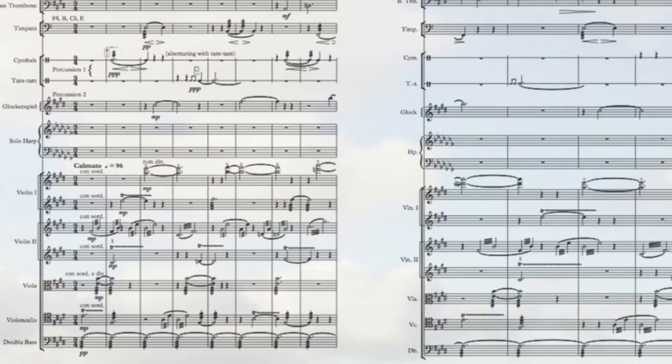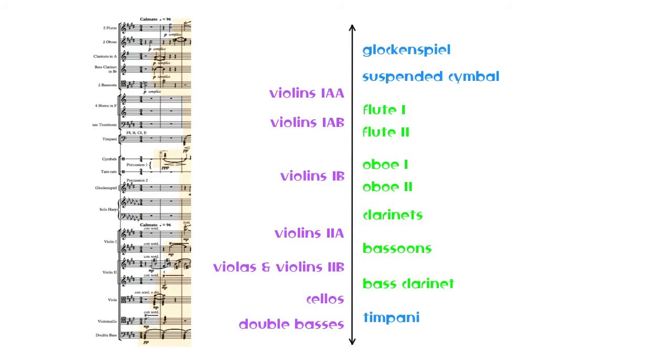But when all is said and done, texture is still a very simple thing to visualize and conceptualize. There it is — a simple vertical line displaying everything that's happening at once, more or less in order of pitch. Though we can deconstruct and contextualize and even atomize the essence of texture, the basic concept of it can't be reduced any further or eliminated.